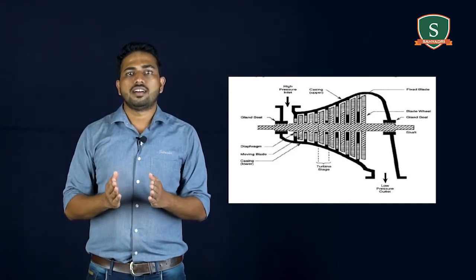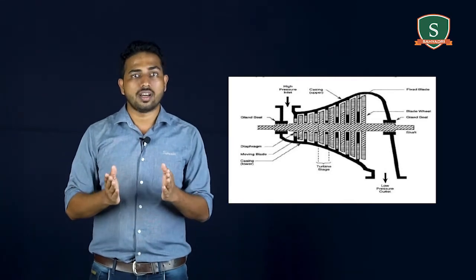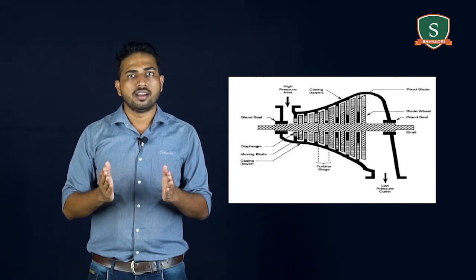Rotating element of water turbine is called runner. Rotating element of gas and steam turbine is called rotor. Rotating element of pump is called impeller.